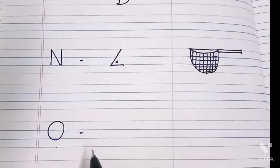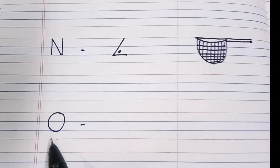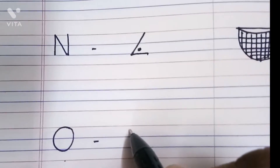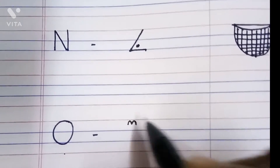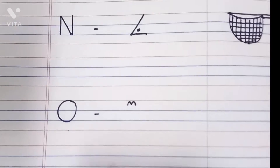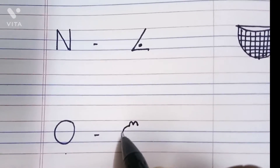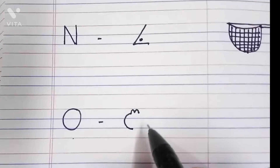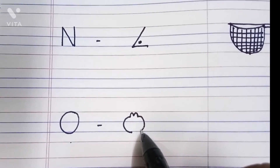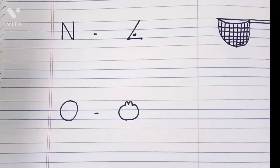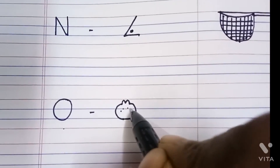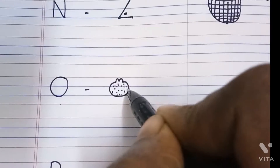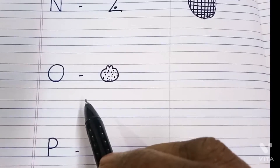Now this is letter O. O says O. So first we will draw the orange here. Come on, let's draw. Draw two small jumping lines this way. Then draw one curve — front open curve. And then from here, back open curve — join from down. Then put a dot inside this. This is orange. O says O — orange.